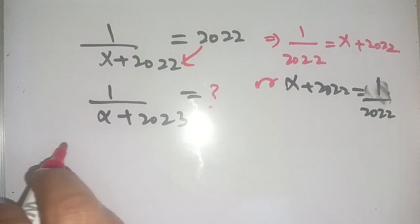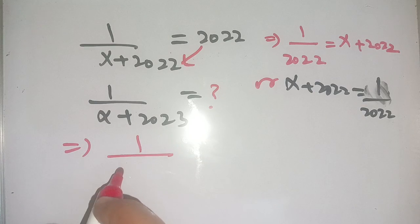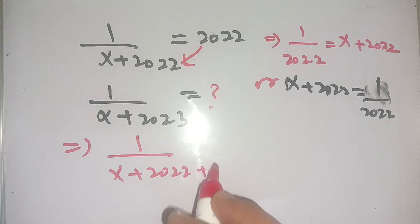Now let us solve this. We can write this as 1 divided by x plus 2023 can be written as 2022 plus 1.